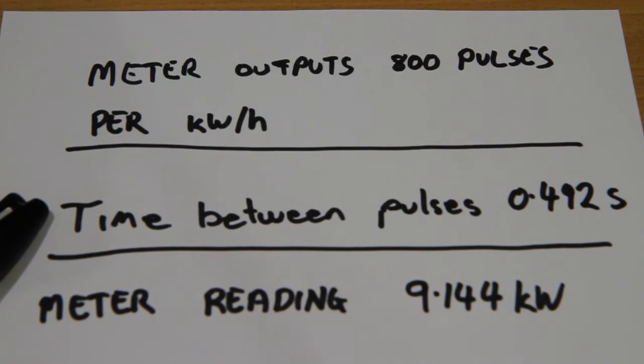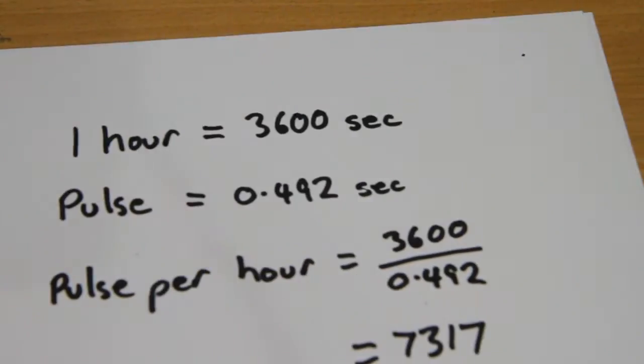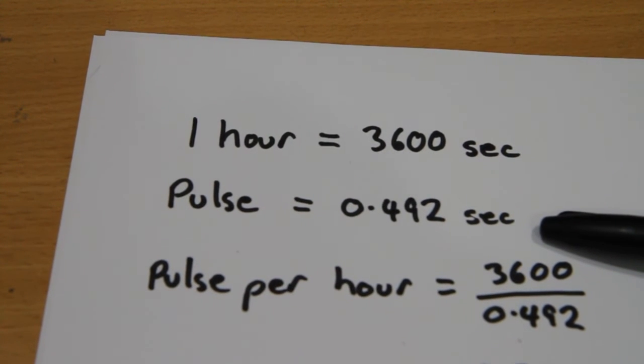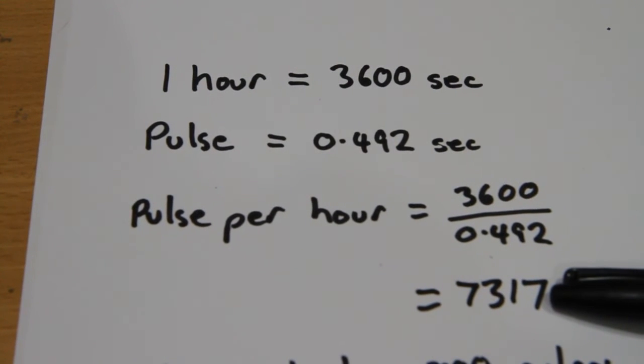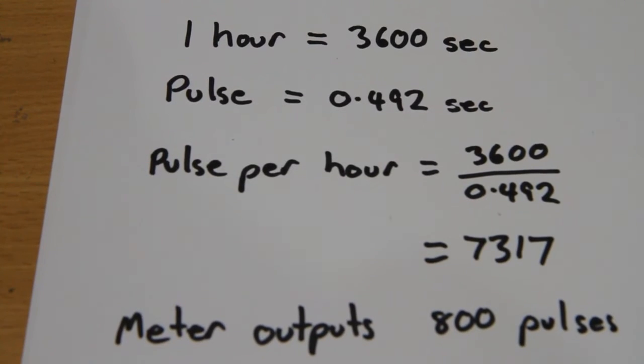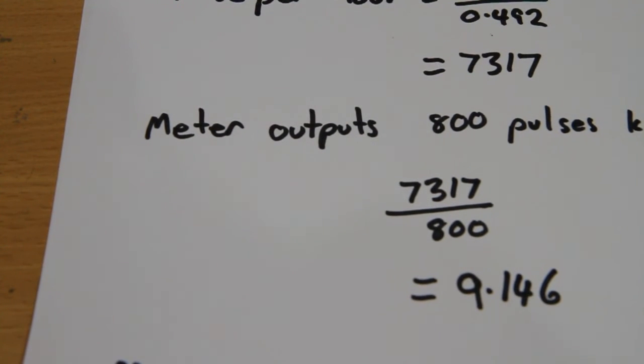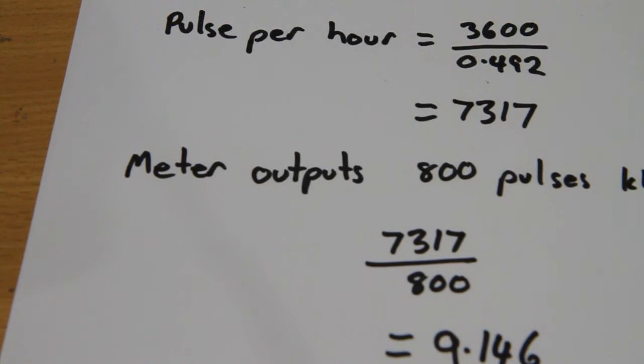This meter outputs 800 pulses per kilowatt hour. The time we measured was 492 milliseconds, and the meter reading was 9.144 kilowatts. One hour equals 3,600 seconds. Dividing 3,600 by 0.492 gives 7,317 pulses per hour. Dividing 7,317 by 800 gives 9.146 kilowatts. The meter reading was 9.144, so that's a pretty good result considering the oscilloscope only reads to 1 millisecond. An Arduino could give better accuracy, but that's close enough.